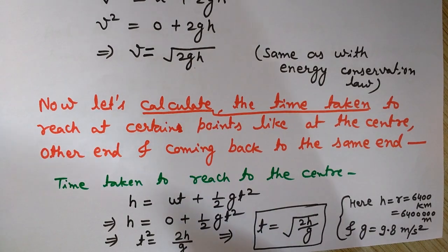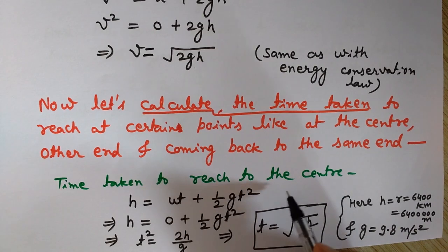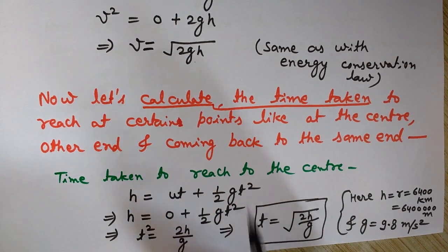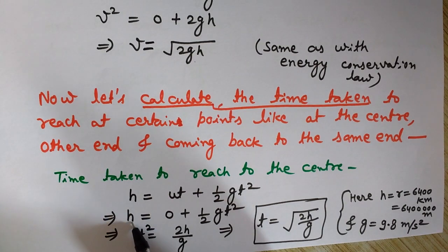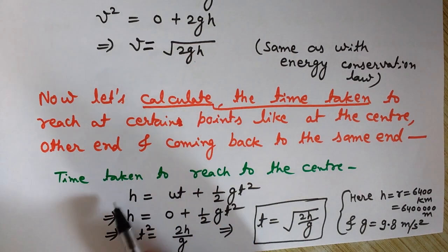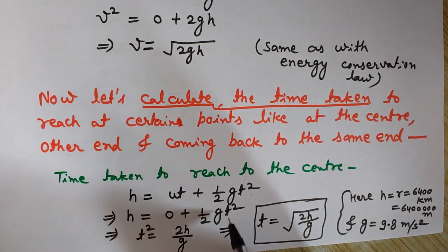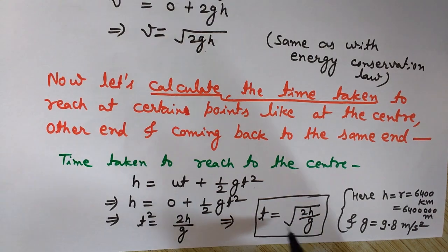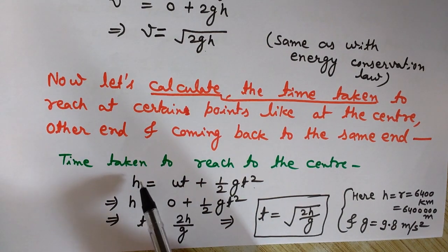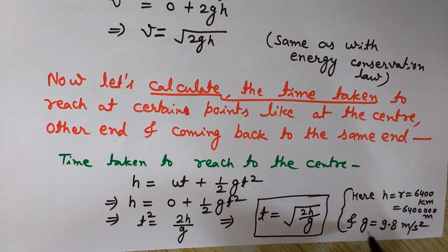Time taken to reach the center is calculated using the equation of motion: h = ut + ½gt². Here h is the radius of the earth, u is zero (falling from rest), so h = ½gt². This gives t² = 2h/g, and therefore t = √(2h/g). We know h (radius of earth = 6400 km) and g = 9.8 m/s², so we can easily calculate the time for the man to reach the center.